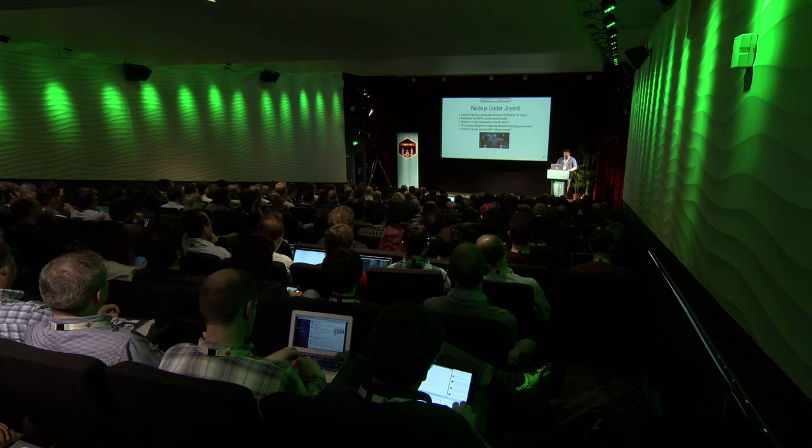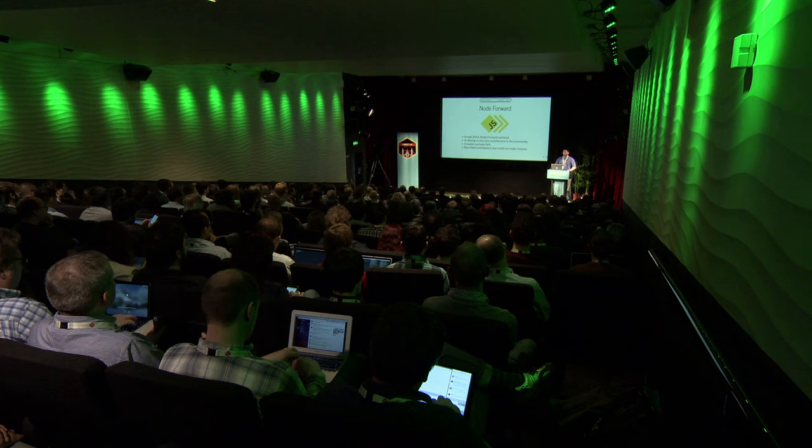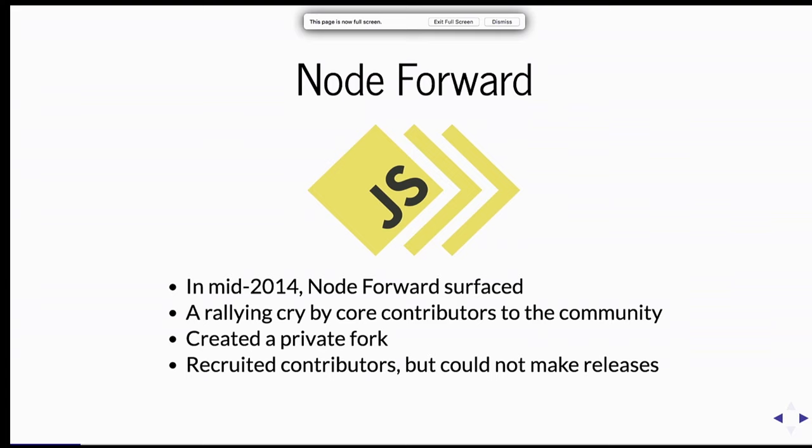So then in mid-2014, a little project called Node Forward surfaced. It was kind of a rallying cry from contributors to the community to say, let's take the project back and make it our own again. They created a private fork and were landing pull requests and closing the same issues left dormant on the Joyent node repo. But there was one really big problem — because it was called Node Forward, they couldn't actually make any releases or they would have been sued.